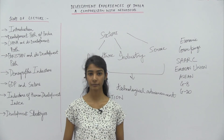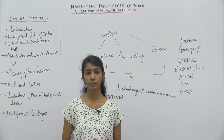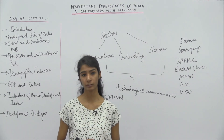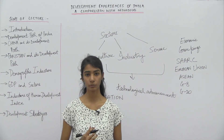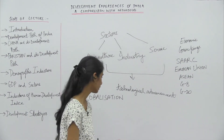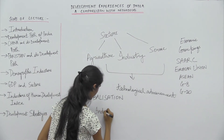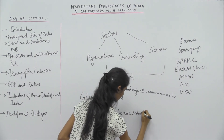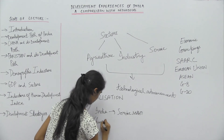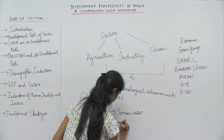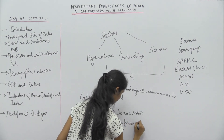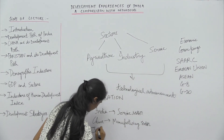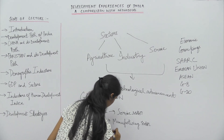In the last two decades, the focus of economic activities has shifted to Asia. Countries like India, China, Singapore, and Japan have made tremendous growth in all sectors. For example, India is leading in the service sector, China is leading in the manufacturing sector, and Japan is leading in the innovation sector.